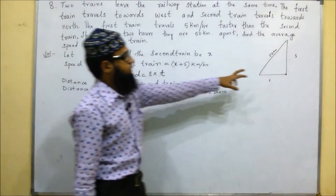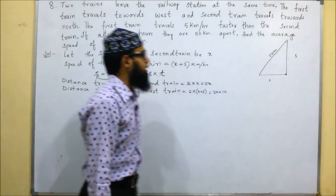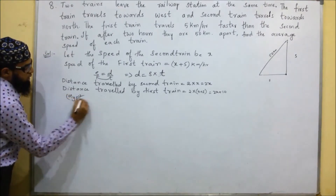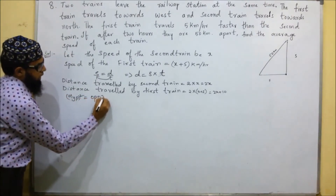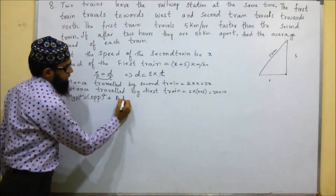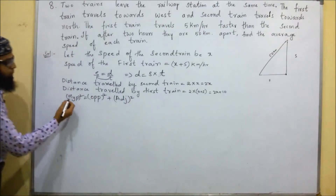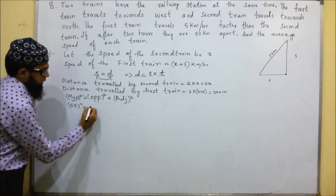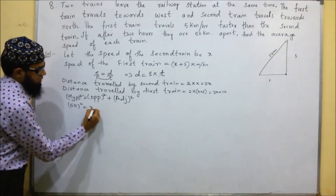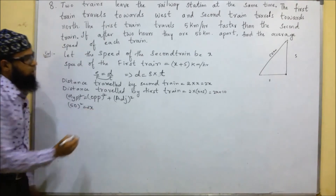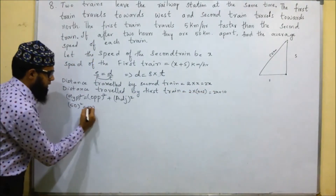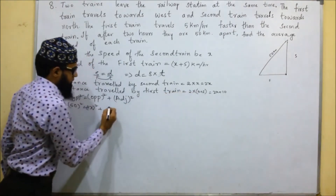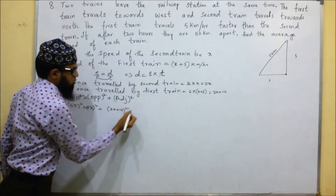Looking at this triangle, it is a right-angle triangle. In a right-angle triangle, hypotenuse squared equals opposite squared plus adjacent squared. The hypotenuse is 50, so 50 squared equals (2x) squared plus (2x plus 10) squared.